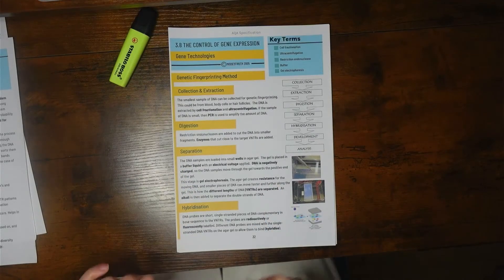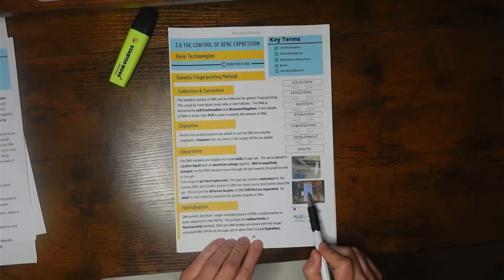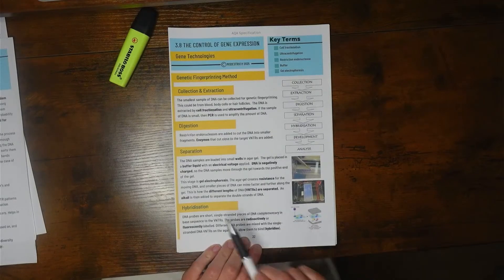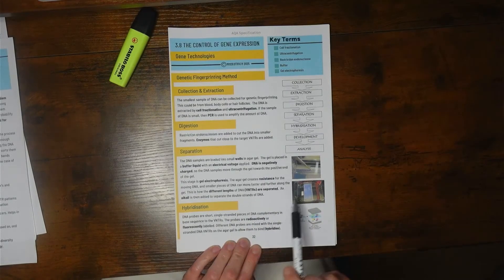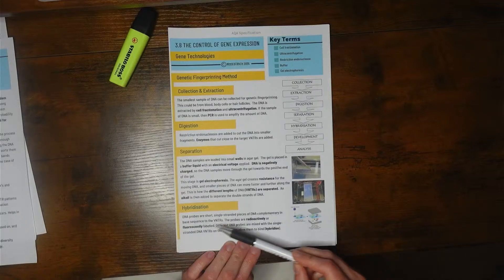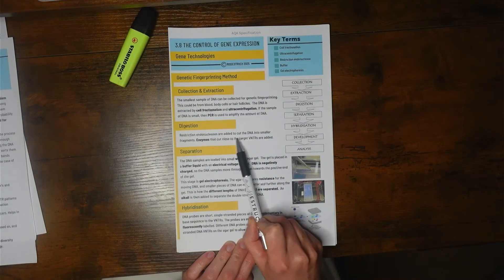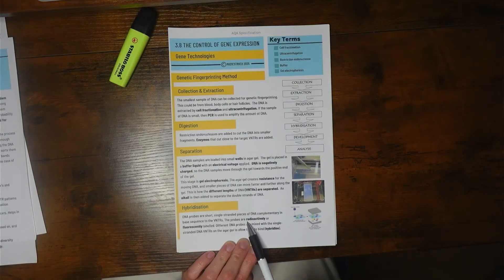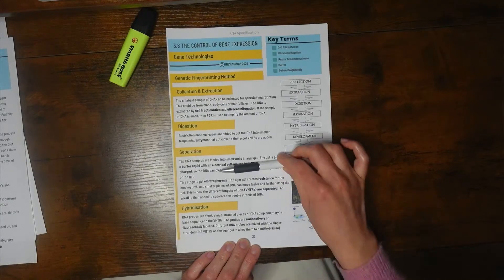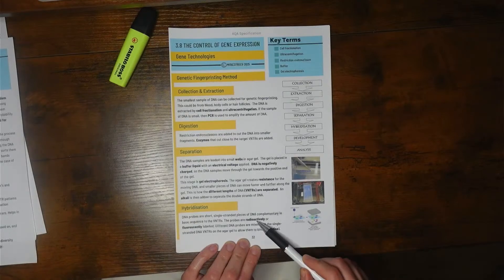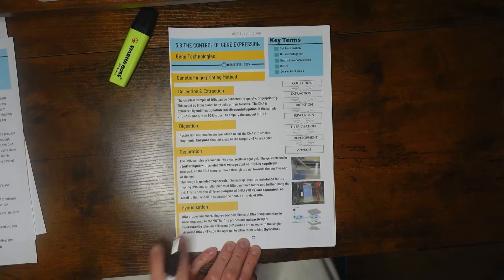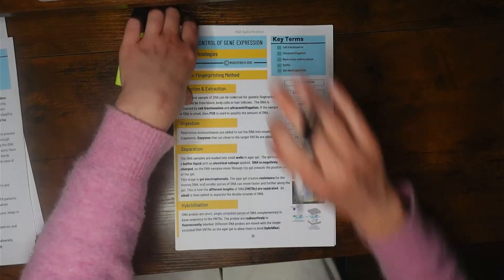That's something we're going to focus on in the exam question we're going to do next: how you can actually visualize that. You can't actually see it, so we have to do some hybridization and develop it. This is when you add your DNA probes, which are short single-stranded pieces of DNA complementary to the VNTRs. You'd make sure the probe is either radioactively labeled or fluorescently labeled because then we can visualize the positions of those bands.